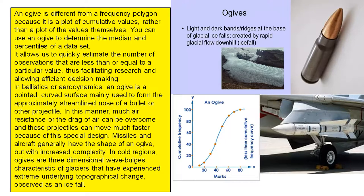Missiles and aircraft generally have the shape of an OGIVE but with increased complexity. In cold regions, OGIVEs are three-dimensional wave bulges characteristic of glaciers that have experienced extreme underlying topographical change, observed as an icefall.